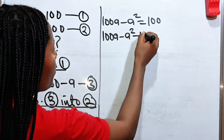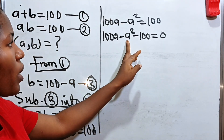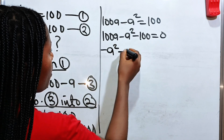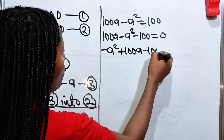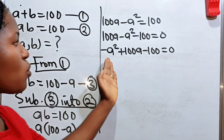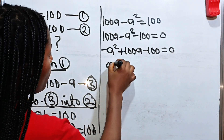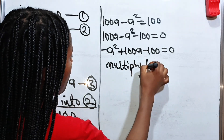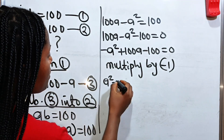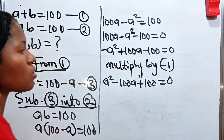Plus 100 will cross to become minus 100 is equal to 0. Let's arrange this — our squared term will come first, followed by this and then our constant. So we have minus A squared plus 100A minus 100 is equal to 0. To remove this negative sign, let's multiply through by minus 1. So we are going to have A squared minus 100A plus 100 is equal to 0.